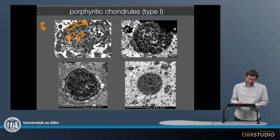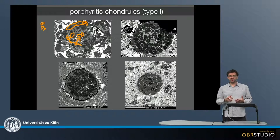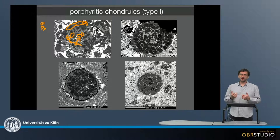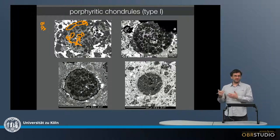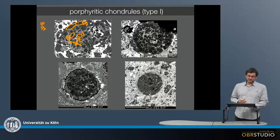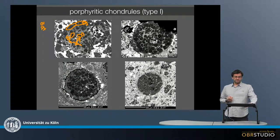In between all these porphyritic minerals there is something grayish, which is either fine crystalline or glassy. This already indicates that chondrules must have cooled very rapidly, otherwise it is not possible to retain, for example, glass. So there is some genetic information stored in this.